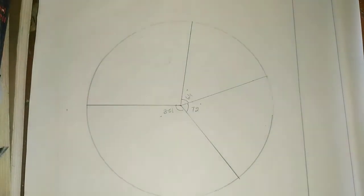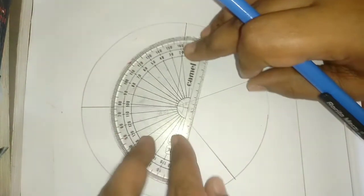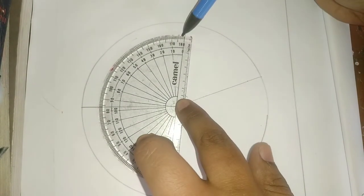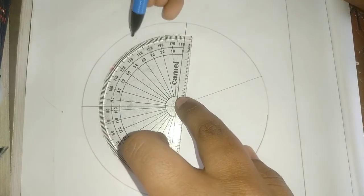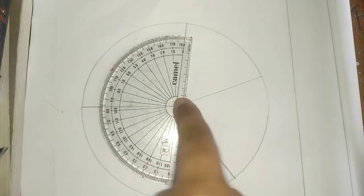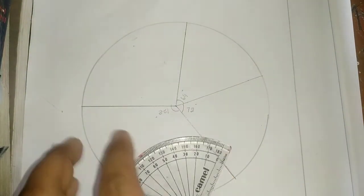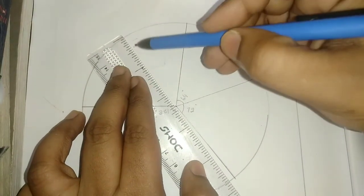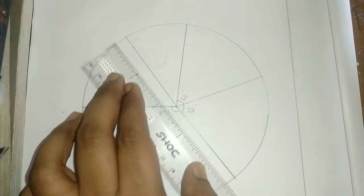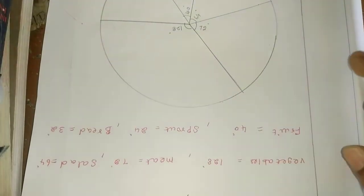Next is Fruits. Fruits is 40 degrees. Place the protractor, count: 0, 10, 20, 30, 40 degrees. Mark the point and join it with a line. This section represents Fruit at 40 degrees. Next is Sprouts, which is 24 degrees. Place the protractor at 24: 0, 10, 20, 21, 22, 23, 24. Mark a dot, draw the line, and join.